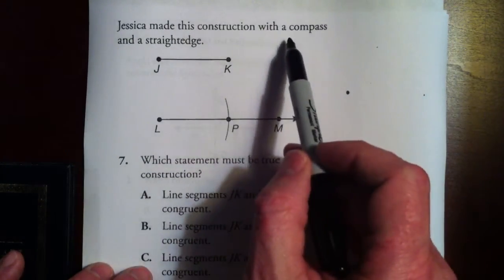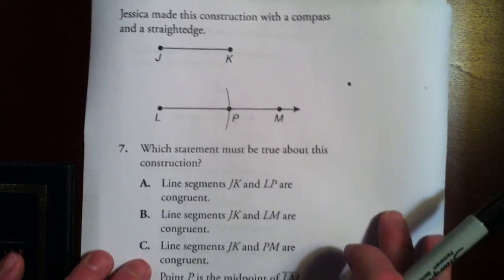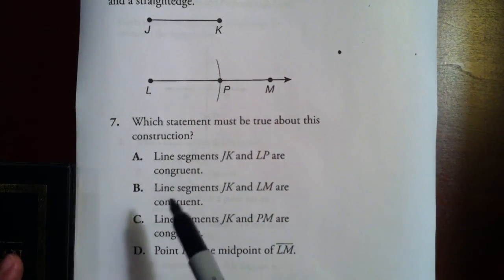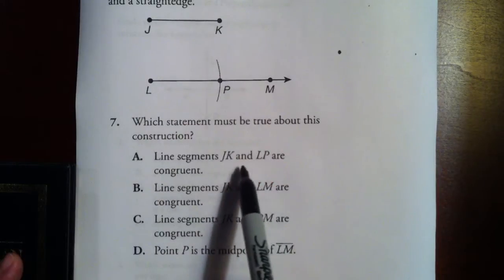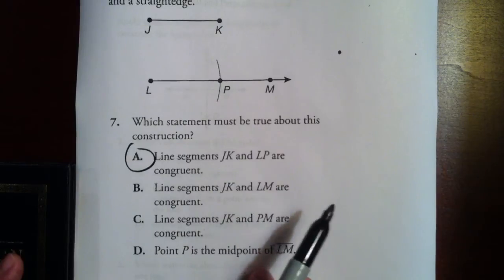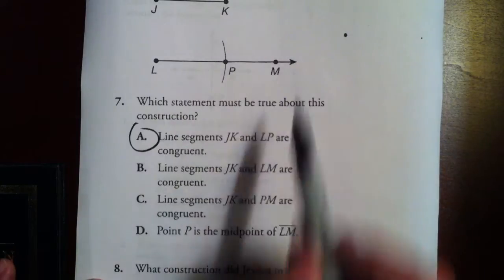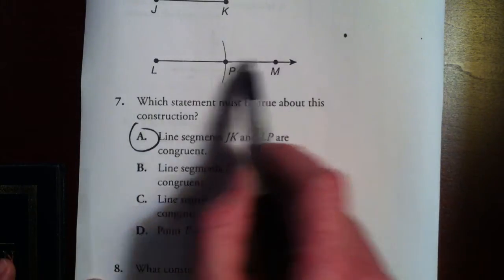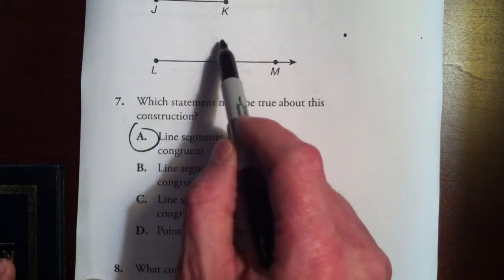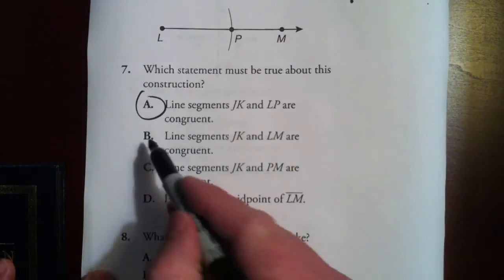Jessica made this construction with a compass and a straightedge. Which statement must be true about this construction? It looks like she's trying to copy a line segment. Line JK and LP are congruent — that looks like our choice. But let's look at the others: line segment JK and LM are congruent — obviously one is much longer than the other, though she measured this on her compass and swung an arc with the same measure. So clearly they're not congruent, eliminate that.